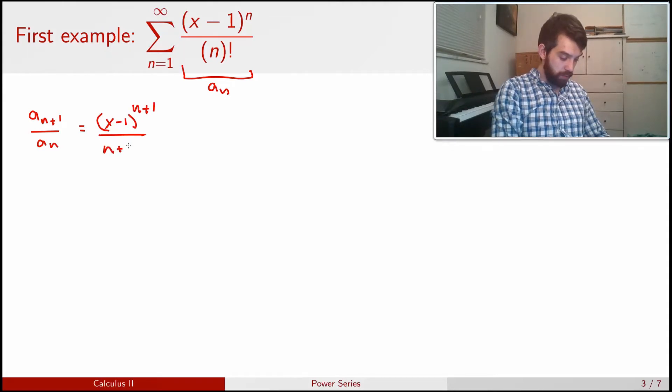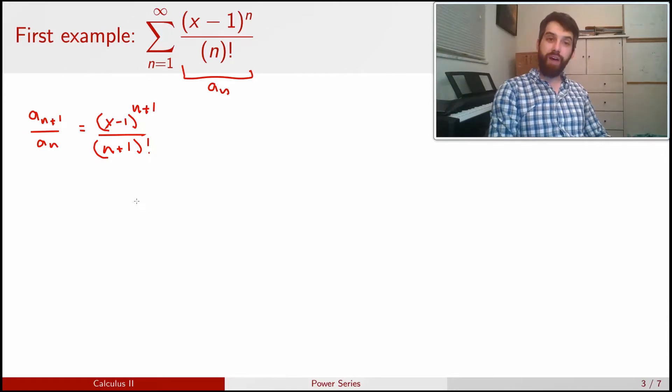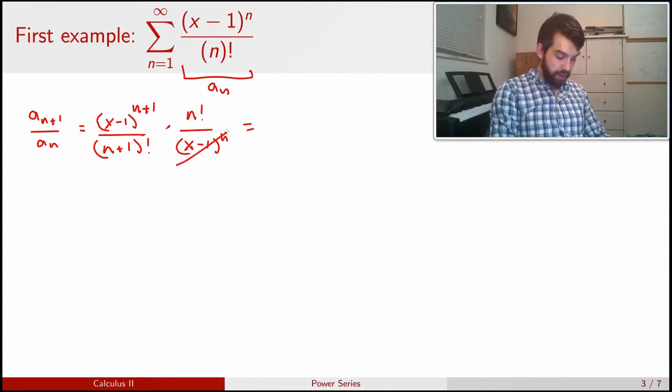a_(n+1) is going to look like (x - 1) all to the power of (n + 1) divided by (n + 1) factorial. And then if I divide out by a_n, I'm going to invert and multiply. This is going to be n factorial divided by (x - 1) to the power of n.